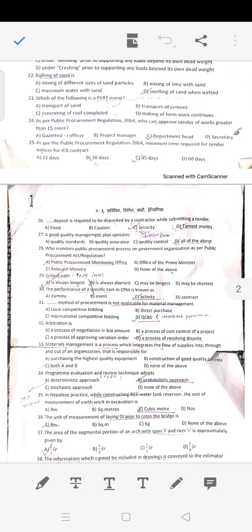Question 27: Quality management plan contains quality standards and quality control. Question 28: As per public procurement regulation, the government office is responsible for monitoring. Question 29: Critical path is always the longest path, which represents the minimum time required to complete the project.